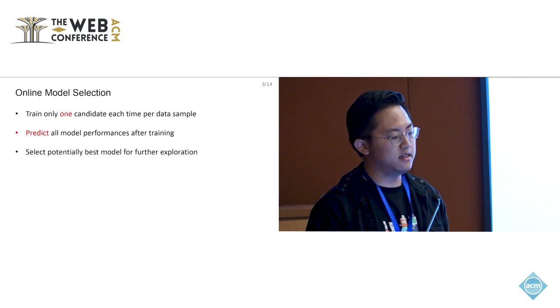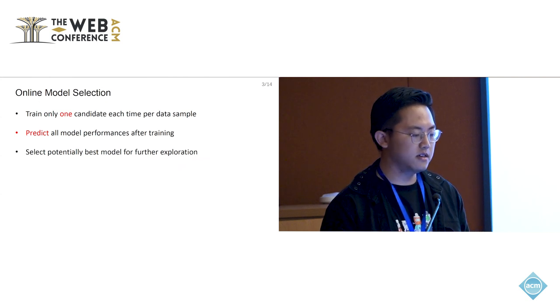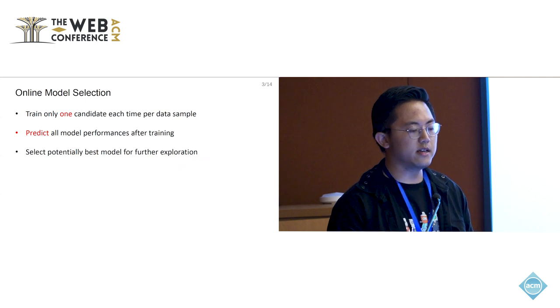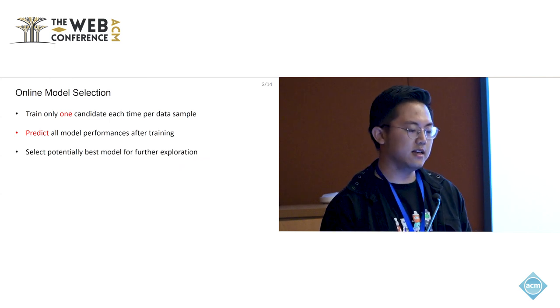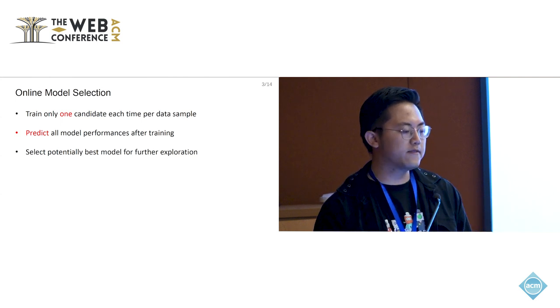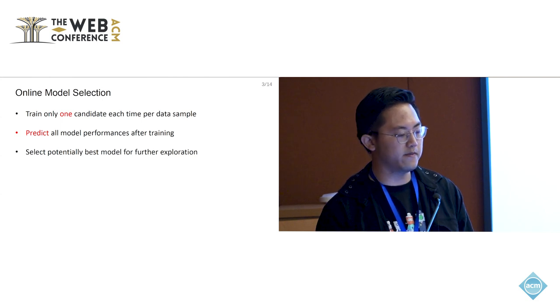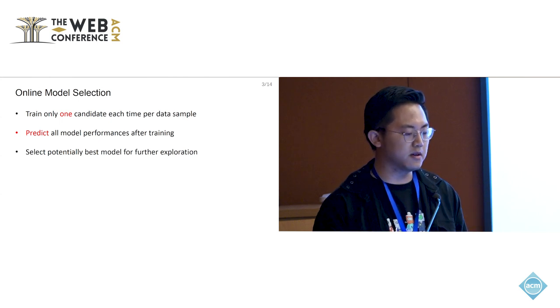Here comes a recent online model selection scheme. Essentially, in online model selection, we only train one candidate model each time per batch of data samples. Given a batch of data samples, we first predict, instead of actually observe, the performance of all models after training. Then, based on the prediction, we select the potentially best model to be trained for further explorations.